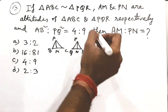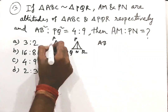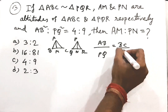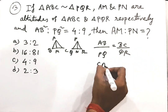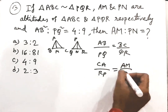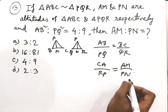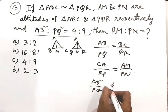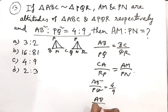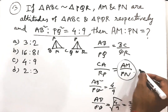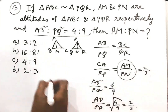Since the triangles are similar, AB by PQ equals BC by QR equals CA by RP equals AM by PN. Given AB squared by PQ squared equals 4 to 9, so AB by PQ equals root(4/9) equals 2 by 3. Therefore AM to PN equals 2 by 3. That is the answer.